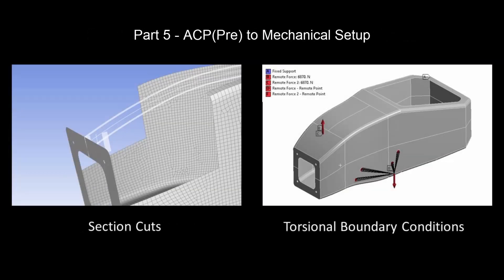Part 5 goes through creating section cuts to visualize the ply layers and applying boundary conditions for torsional analysis.